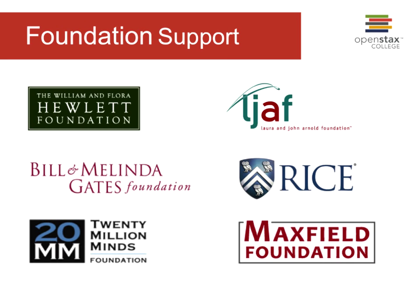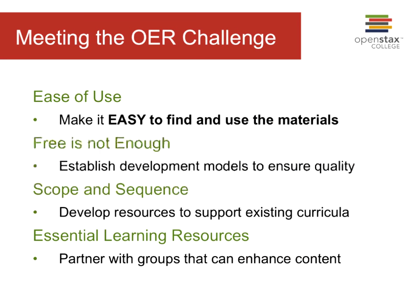One of the big questions OpenStax always gets is how they're funded. The development of new textbooks is primarily funded by foundation support — they always like to thank their supporting foundations. They also have a sustainability model that allows them to continue the books. If they lost all funding, they couldn't develop new books, but could do new editions. The development of new books is absolutely supported by these foundations.